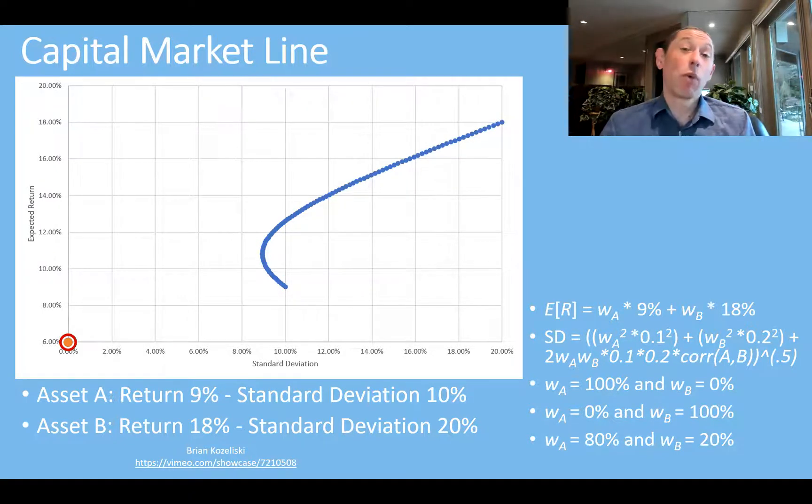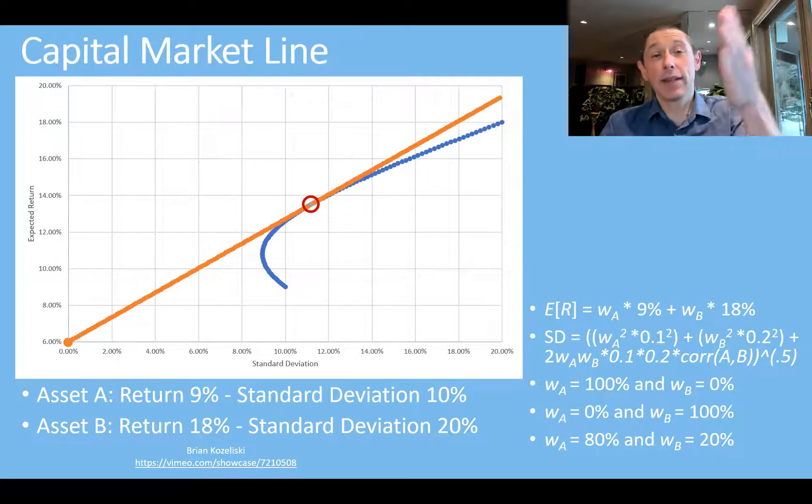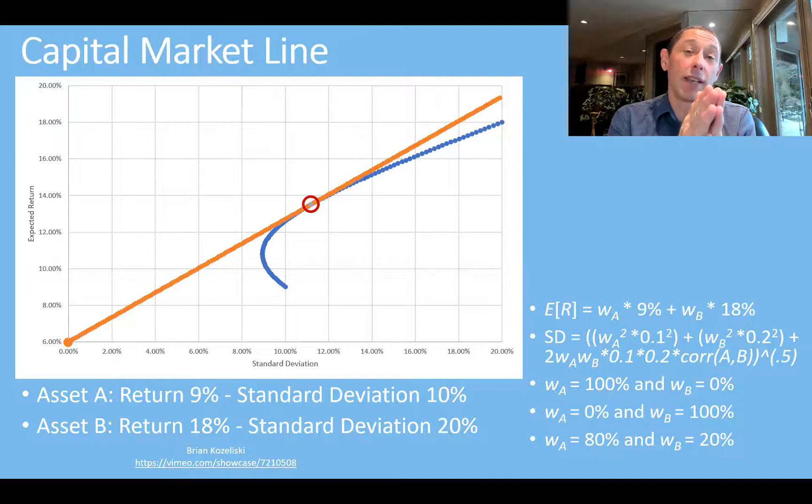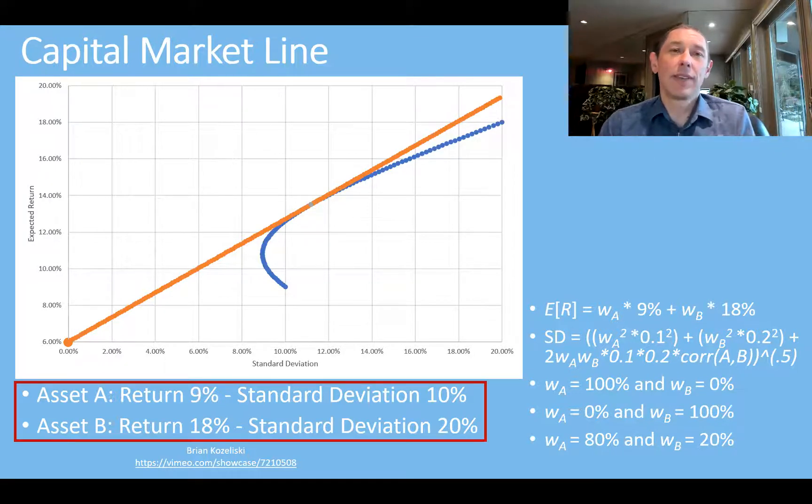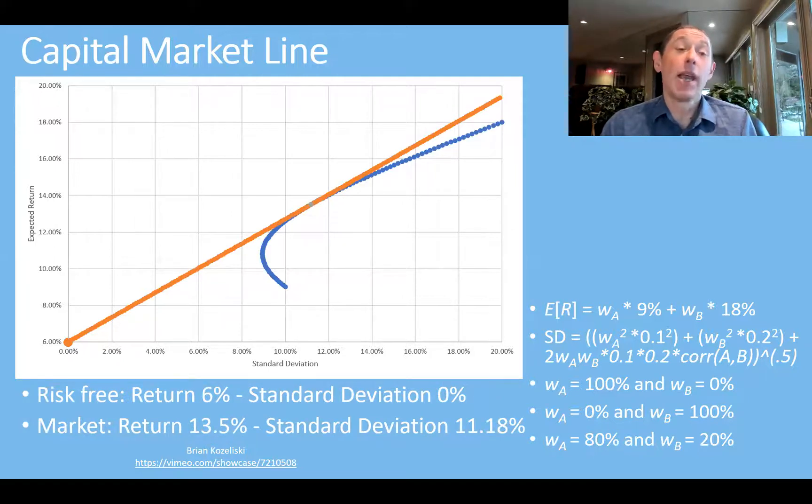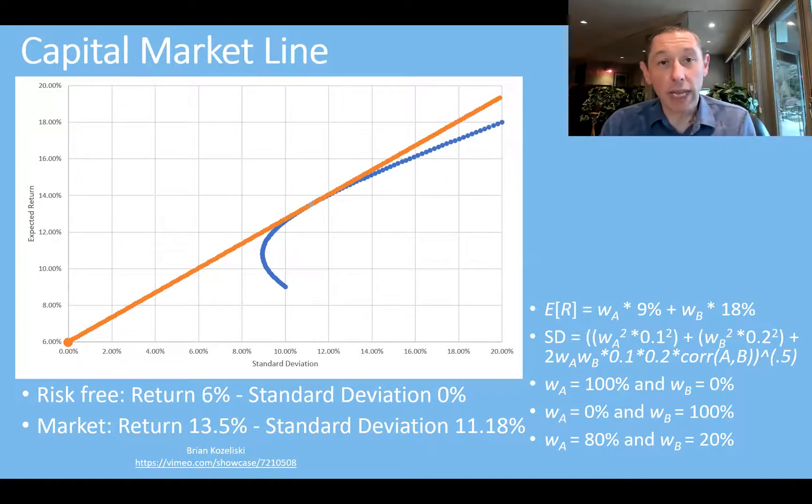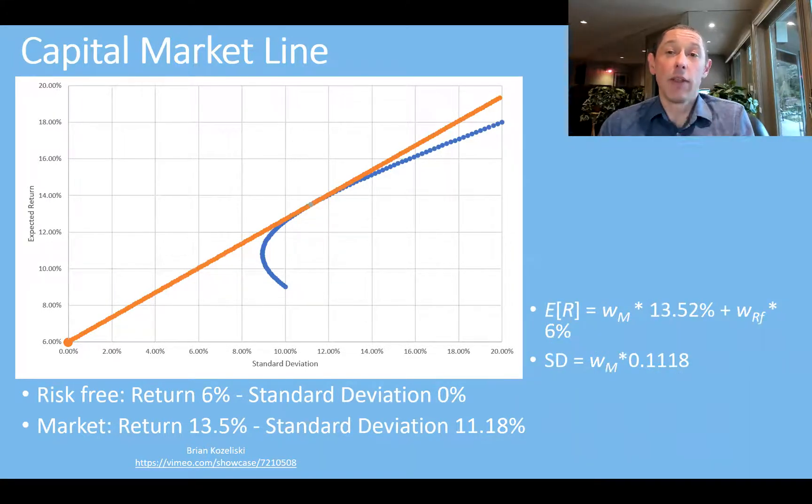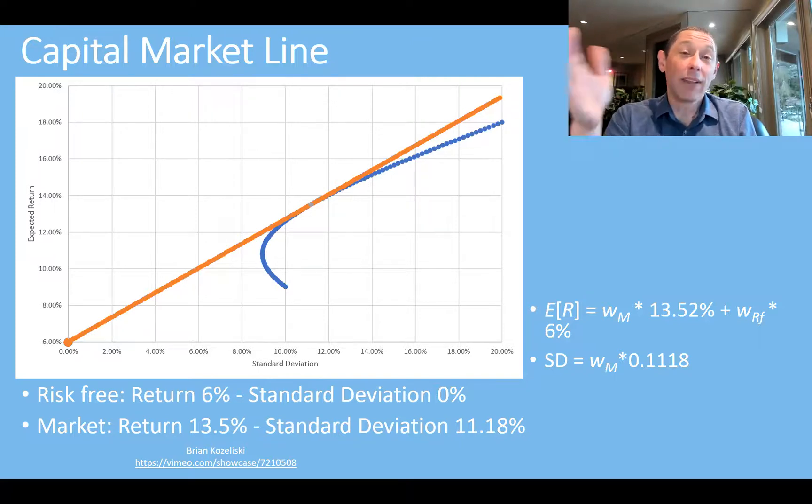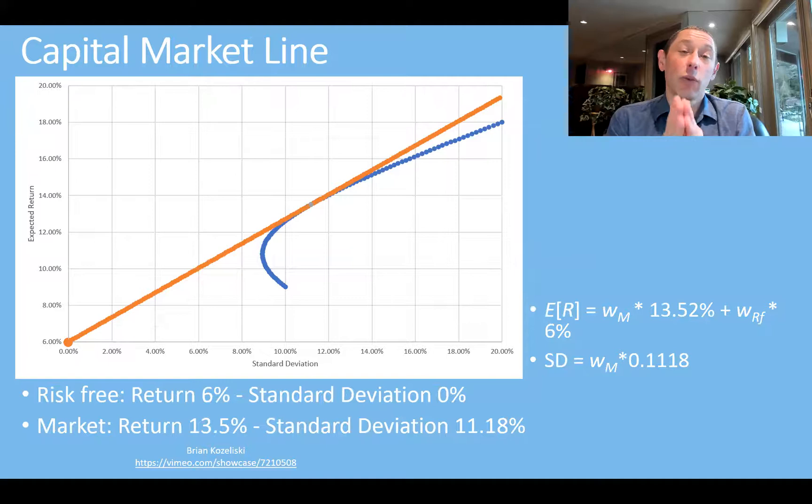Now, what we can do is introduce a risk-free rate, and what we're going to do, just like we did before, was we're going to draw a line that's tangent to this curve, and that's going to be called the market portfolio. So that particular place is the tangent on that curve, and we're going to say if we can borrow or invest at the risk-free rate, then we can improve our odds. So this now changes. Instead of having two assets A and B, we're going to have the market and the risk-free rate. So that's risk-free rate of 6%, standard deviation of zero. That market portfolio, which was 50-50 between the two assets, has a return of 13.5 and a standard deviation of 11.18. Now, this part over here also changes. So instead of having the weighted averages of the two assets, we have the market, which is 50-50, and the risk-free rate. The standard deviation simplifies super easy because the standard deviation of the risk-free rate is zero.